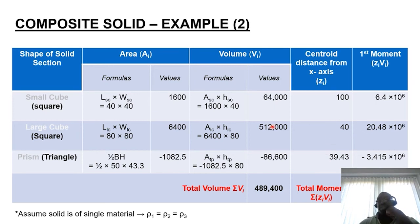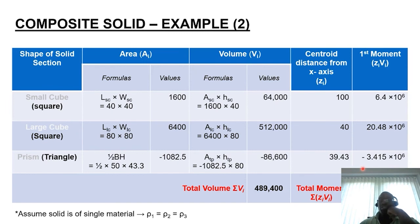Using the centroid positions, we calculate the first moment of volume for each form by multiplying the volume by its centroid coordinate measured from the x-axis. Small cube: 6.4 × 10⁶ mm³, large cuboid: 20.48 × 10⁶ mm³, triangular prism: −3.415 × 10⁶ mm³. Adding these together gives the total first moment of volume: 23,465,000mm³.